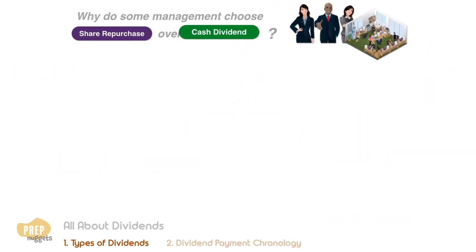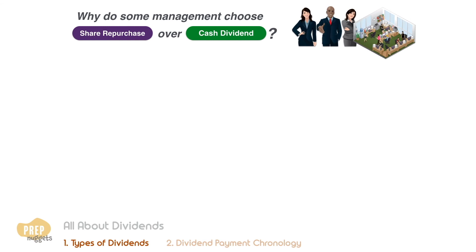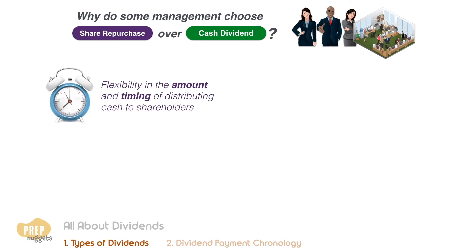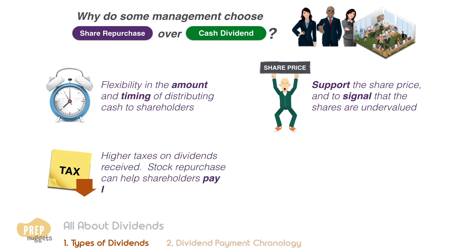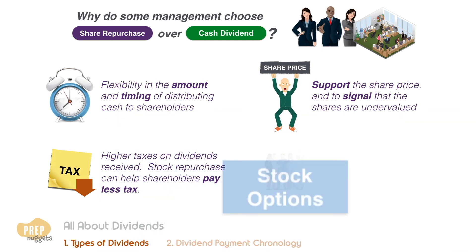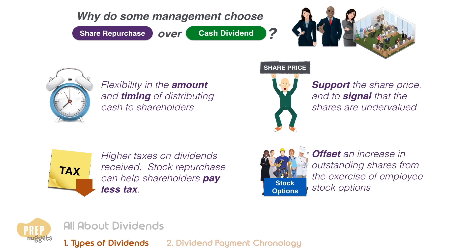What are some of the reasons a company's management chooses to repurchase shares instead of paying cash dividends? Firstly, share repurchases afford the company flexibility in the amount and timing of distributing cash to shareholders. Secondly, when the share price drops too low, the company may repurchase shares to support the share price and to signal that management believes the shares are undervalued. Thirdly, some markets impose higher taxes on dividends received than capital gains, so stock repurchases can help shareholders pay less tax. And lastly, share repurchases are sometimes used to offset an increase in outstanding shares from the exercise of employee stock options.